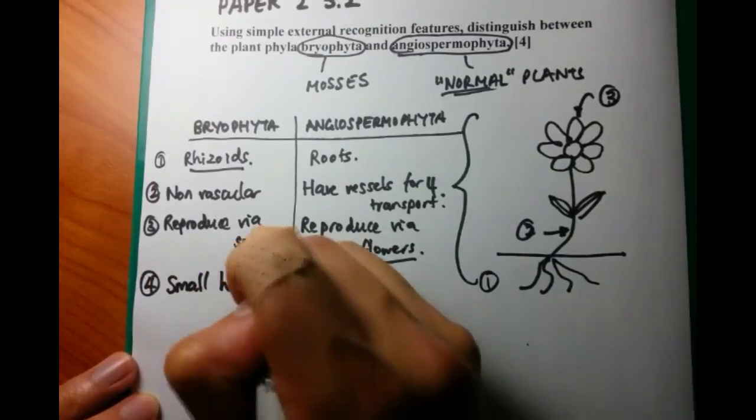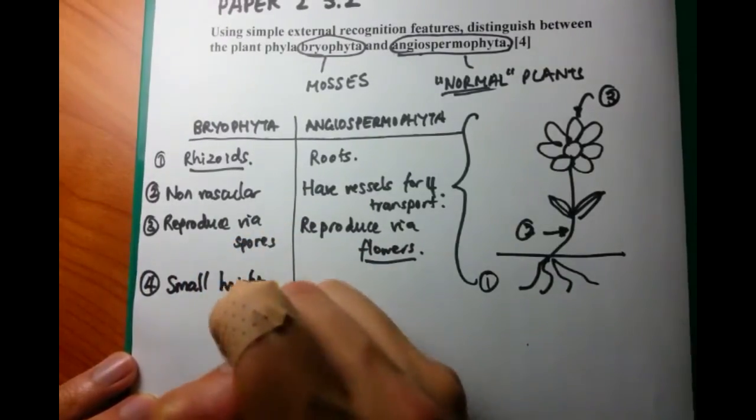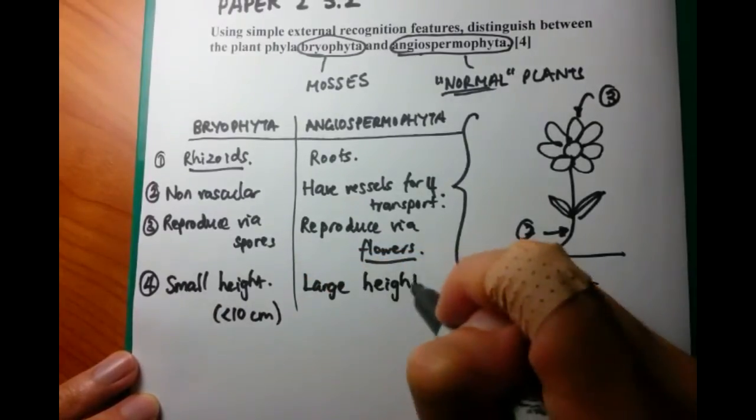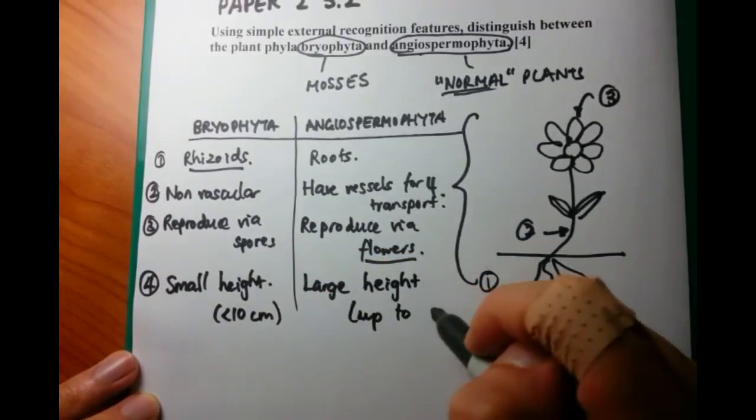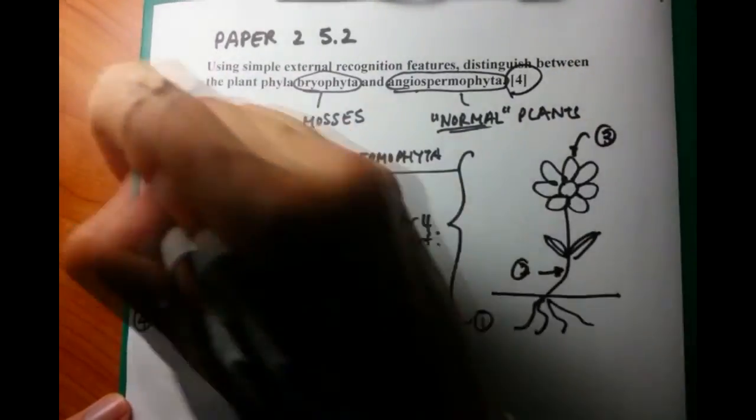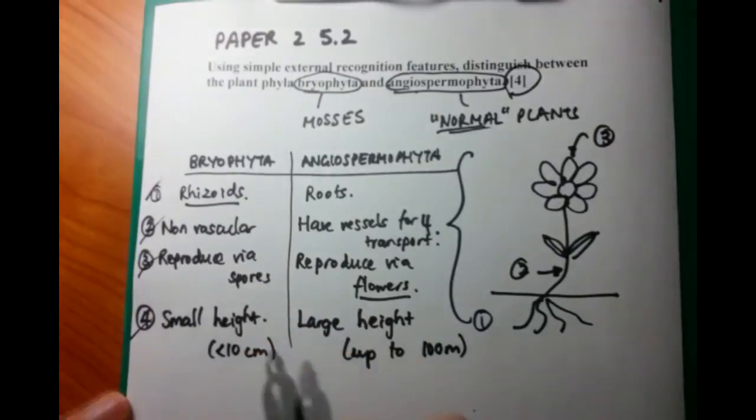The final thing we're going to talk about is number four, how big the plant is altogether. Bryophyta are very small, whereas Angiospermophyta are much larger and can be up to 100 meters in height. So that's a simple way to go through this question for four marks.